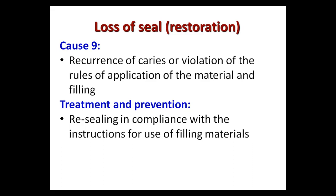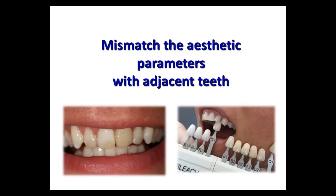Cause number nine is recurrence of caries or violation of the rules of application of filling material. Treatment involves resealing in compliance with the instructions for use of the filling material. Another error is mismatch of aesthetic parameters with adjacent teeth — for example, when a tooth after restoration has a different shape or color compared to natural teeth.